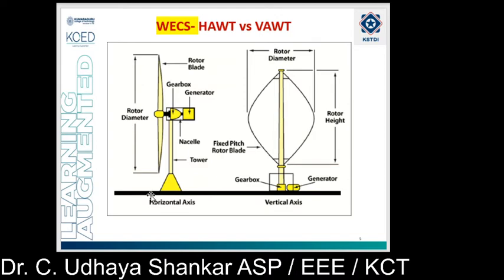Most of the wind turbines used today are of the horizontal axis type, because the turbine is placed horizontally with respect to the ground. It has been well researched and many field trials have also been done, from which the horizontal axis wind turbine has become a well-established technology.